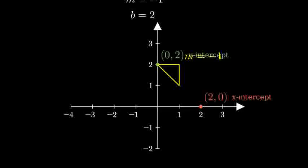The slope of negative 1 tells us that for every 1 unit we move right, we go down 1 unit. Let's visualize this slope with a slope triangle.